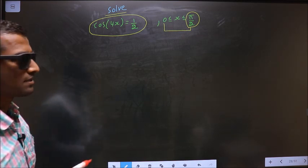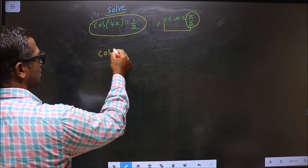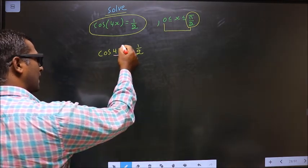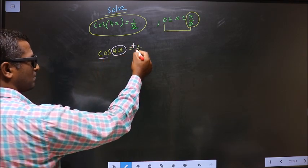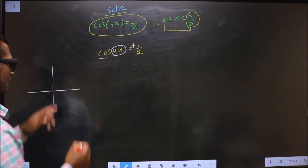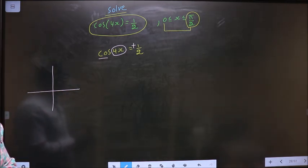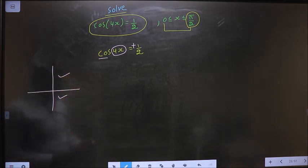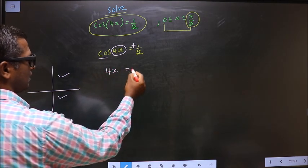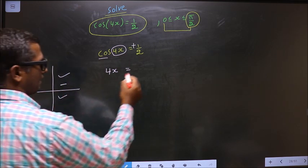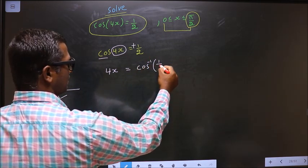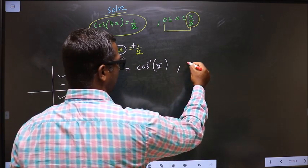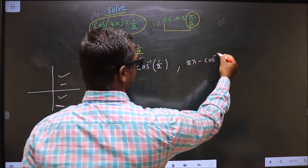Now the given equation is cos(4x) = 1/2. To get the values for 4x, here it is cos and it is positive. So you should check in what all quadrants is cos positive. It is all silver tea cups. So cos is positive in the first and in the fourth. Now 4x equals: to get an angle in the first quadrant, we should do directly cos⁻¹(1/2). To get an angle in the fourth quadrant, we should do 2π - cos⁻¹(1/2).